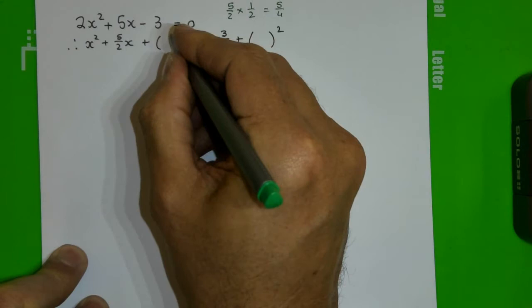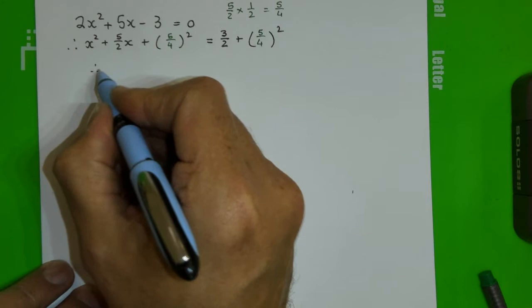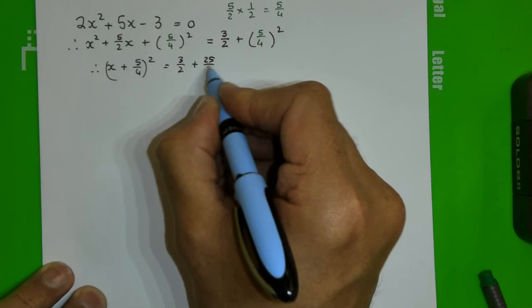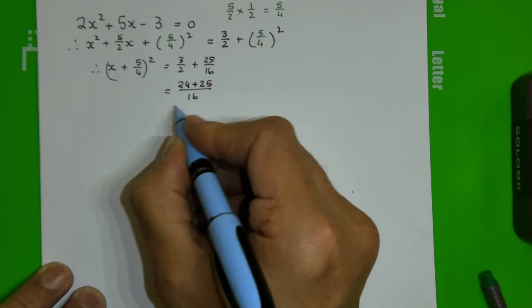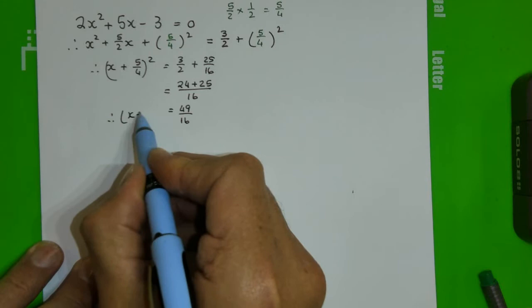So I'm adding (5/4)² to both sides. On the left side I get (x + 5/4)², and on the right side I have 3/2 plus 25/16. The LCD on the right hand side is 16, so I multiply 3/2 by 8 to get 24/16, giving me 24/16 + 25/16 which is 49/16.